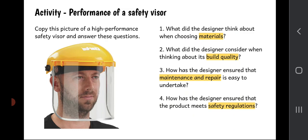Number three: how has the designer ensured that maintenance and repair is easy to undertake? What makes something easy to maintain and repair? And I'll give you a clue here. It's all to do with how easy it is to take apart and put back together again. It's about how easy things are to reach and to get to. So how has the designer ensured that maintenance and repair is easy to undertake? What makes that visor easy to maintain?